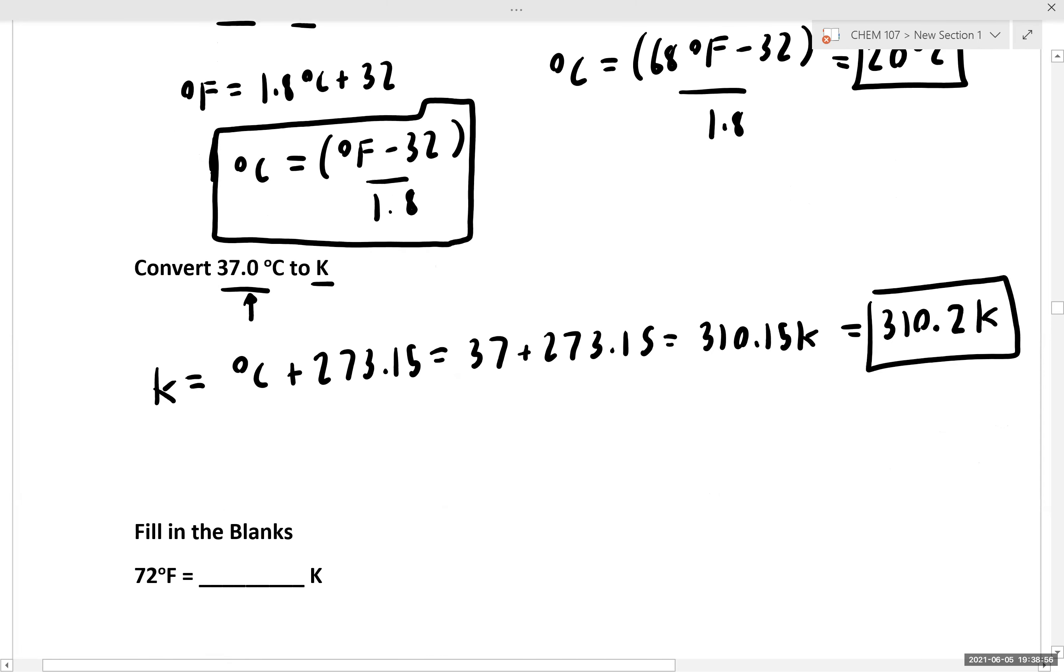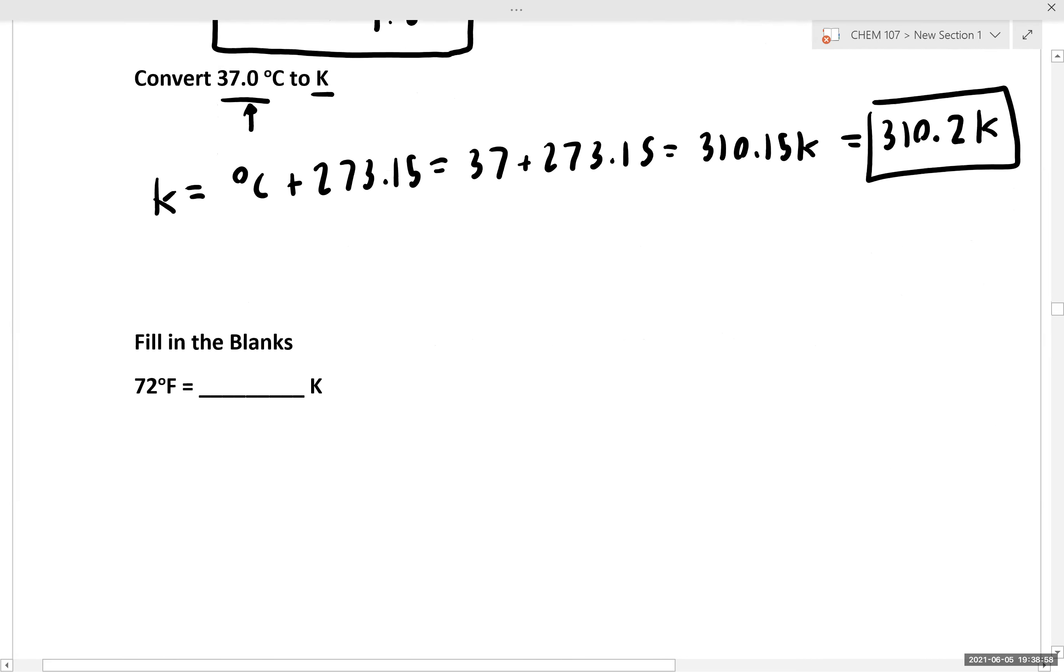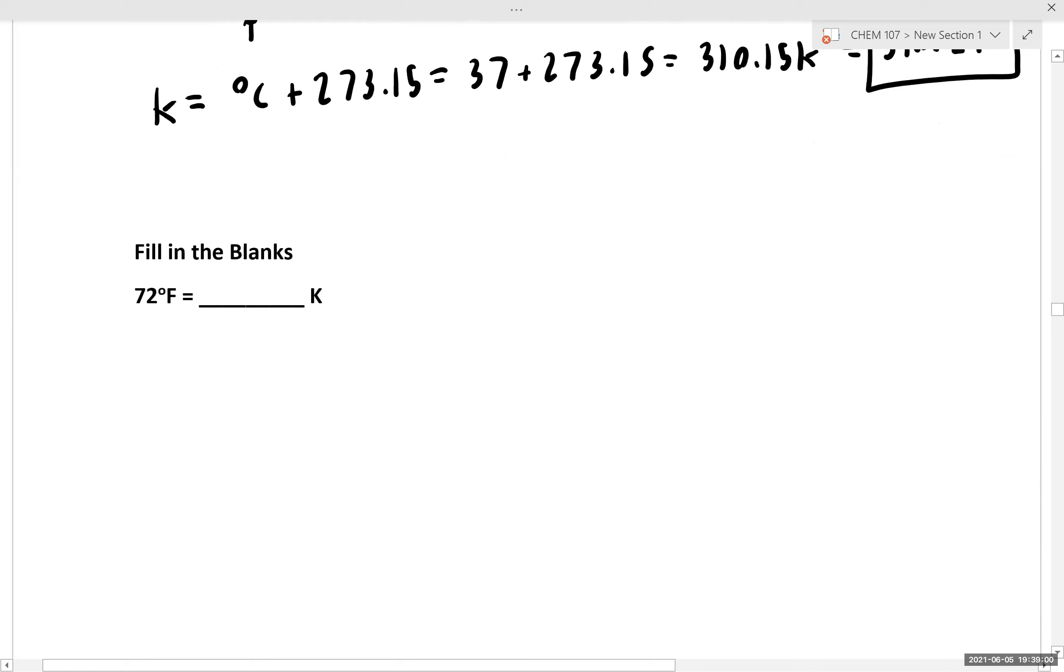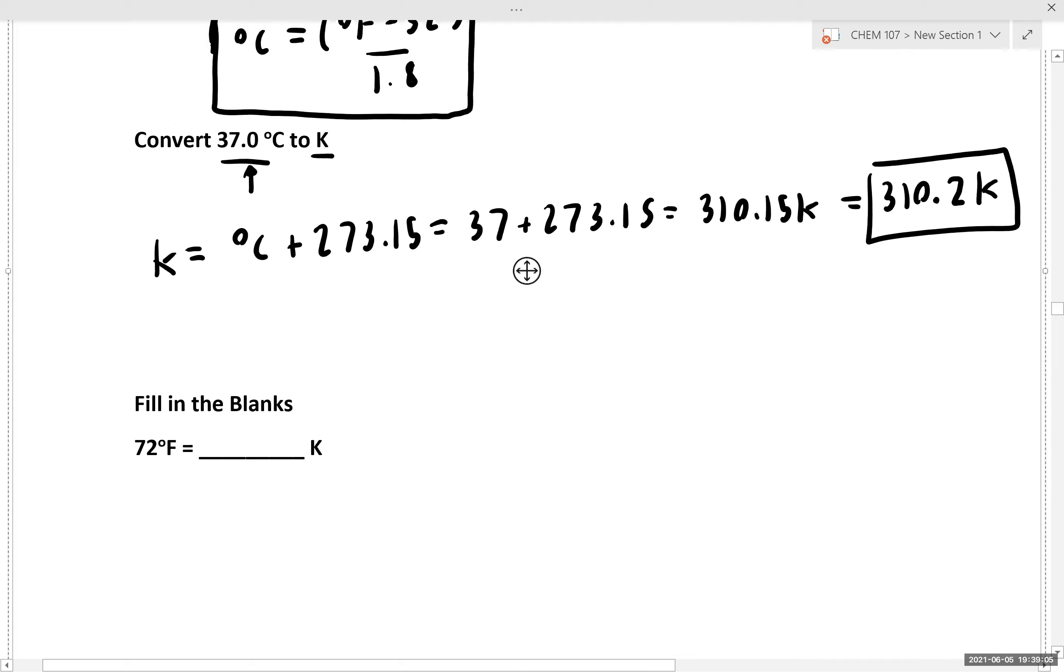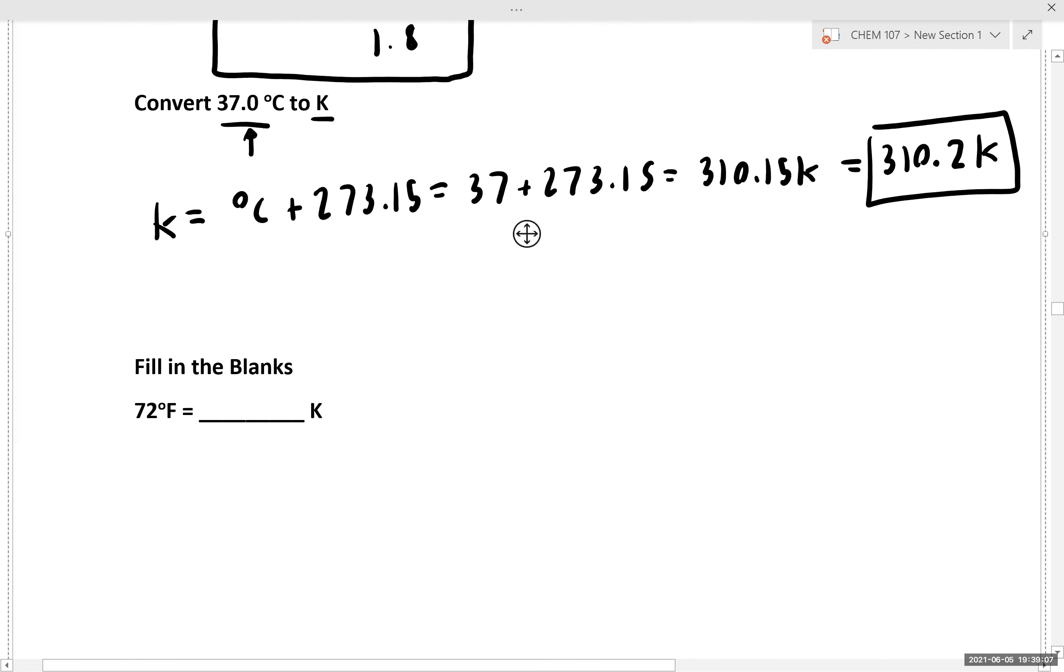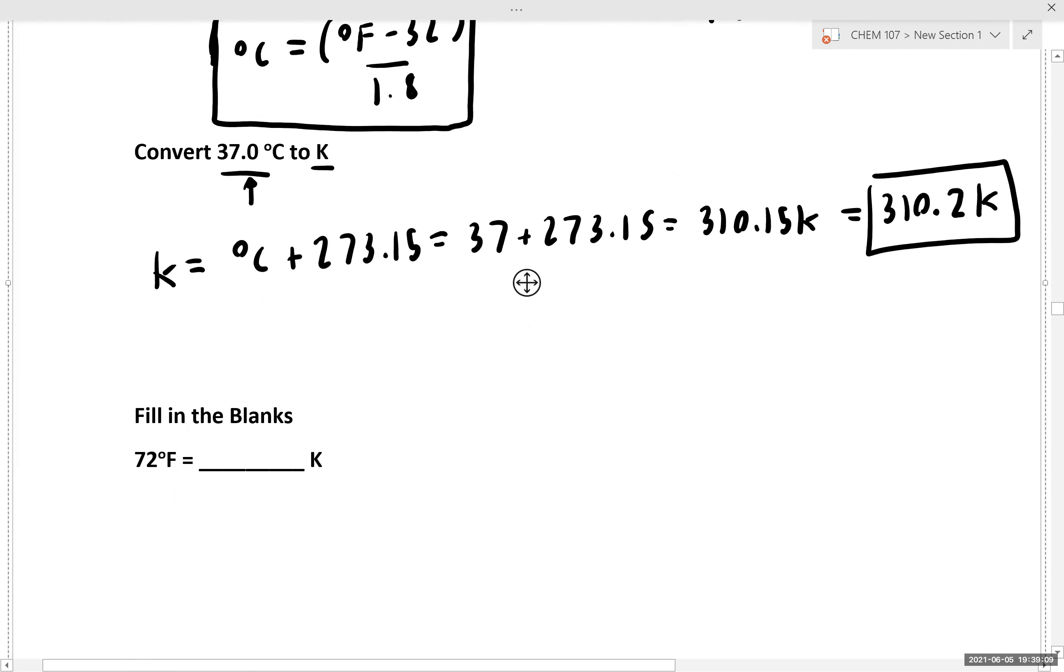Okay, let's do one more example. This time a fill in the blank: 72 degrees Fahrenheit equals blank Kelvin. Now we know that to go from Fahrenheit to Kelvin, we're going to need to go through an intermediate unit, in this case Celsius.